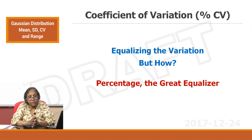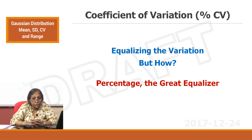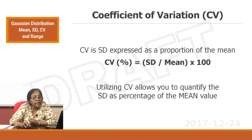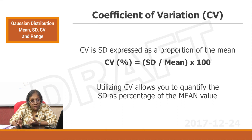What is coefficient of variation and how is it different from standard deviation? CV equalizes the variation — percentage is a great equalizer. Standard deviation can be expressed as a percentage by dividing the SD by the mean and multiplying by 100. Therefore you get CV%, and utilizing CV allows you to quantify the SD as a percentage of the mean value. With CV% it becomes very easy to compare different methods and mechanisms over a period of time.